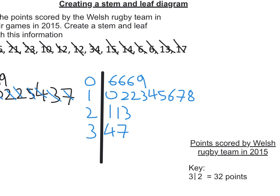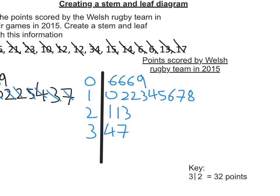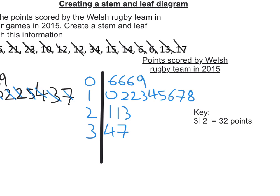The last thing I need to add is a title: 'Points Scored by Welsh Rugby Team in 2015.' And a key to tell us what each of the leaves mean — i.e., if you have 3, line 2, that means 32 points. And there is my stem and leaf diagram.